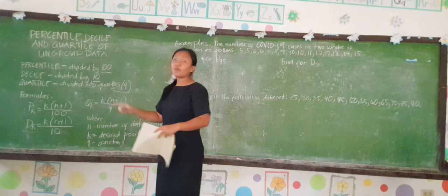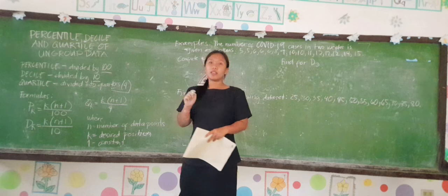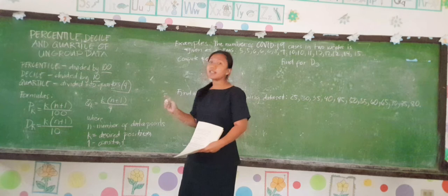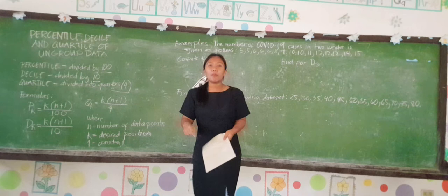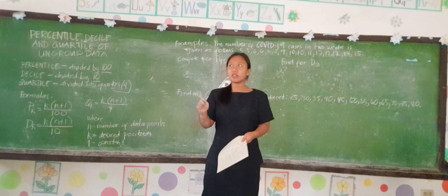For decile, you have to remember the key concept that 'dec' means 10. For example, a decagon has 10 sides. For quartile, you just have to remember 'quarters.' For example, when we are talking about our grading periods in high school — first quarter, second quarter, third quarter, and fourth quarter.